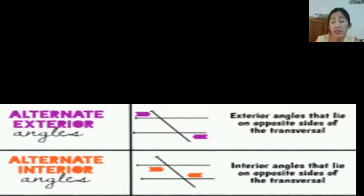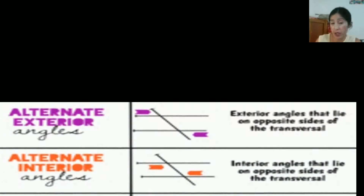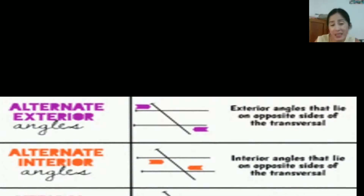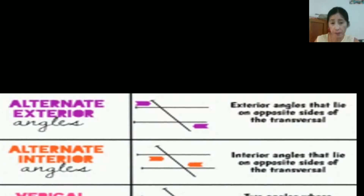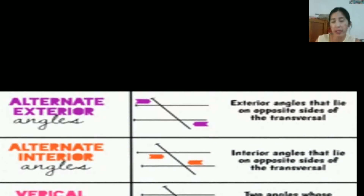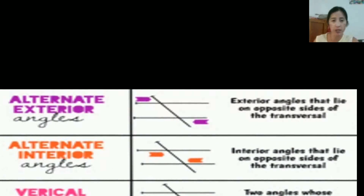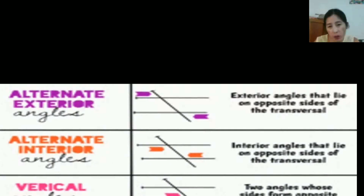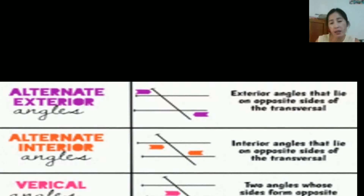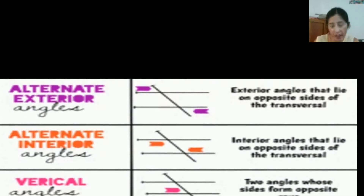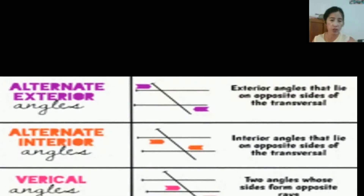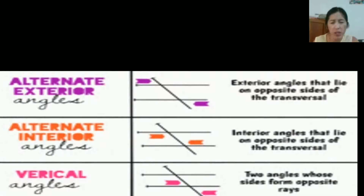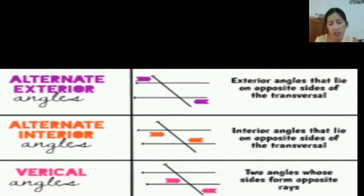Alternate interior angles are colored orange. They are called alternate because one is on the left and the other is on the right, and interior because they are on the inside of the parallel lines. We can also make two pairs of alternate interior angles from this figure — the two colored orange angles and the angles at the side of each of them.